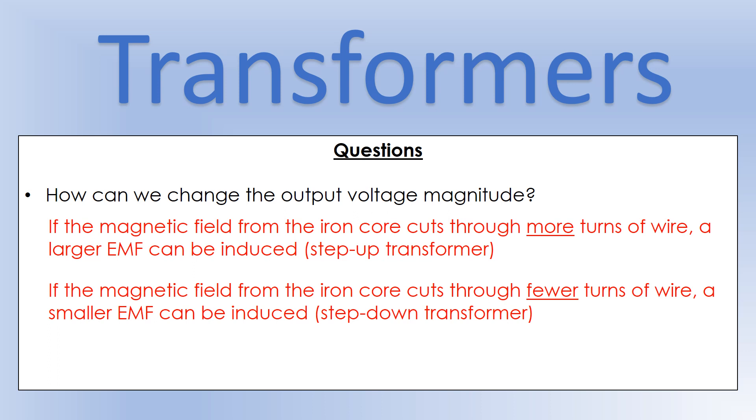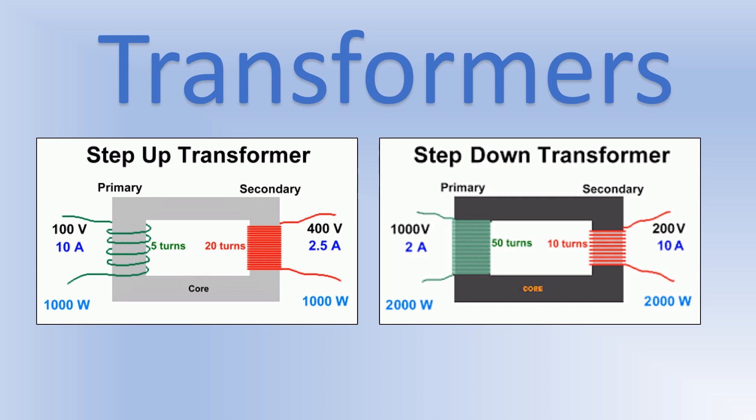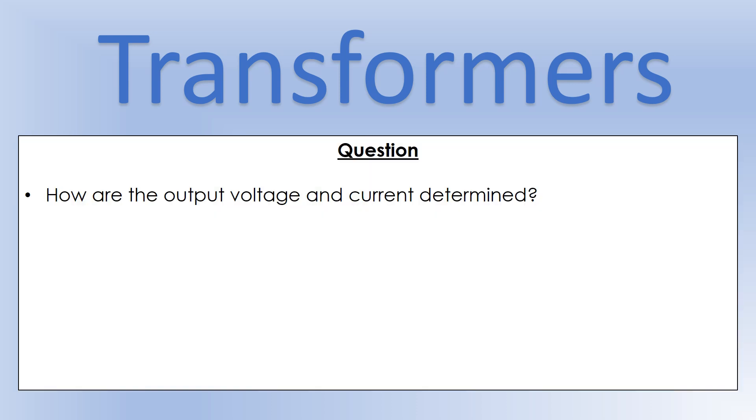On the left we have a step-up transformer: five turns on the primary side, 20 turns on the secondary side. More turns on the secondary means more flux cutting, so we get a larger EMF on that side. A step-down transformer has fewer turns on the secondary side, meaning a smaller amount of flux cutting, and therefore a smaller induced EMF.